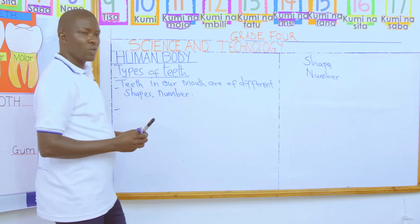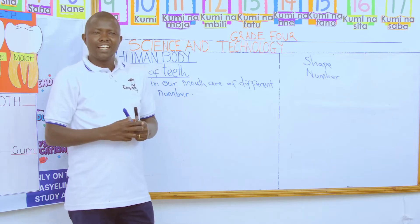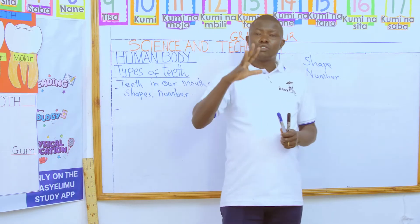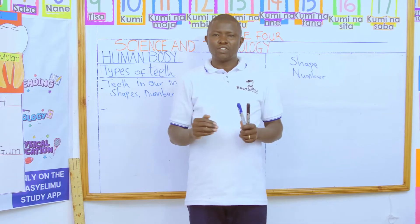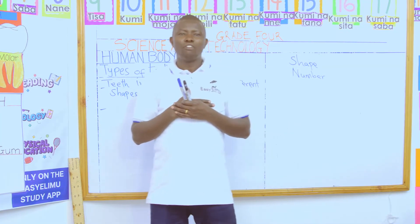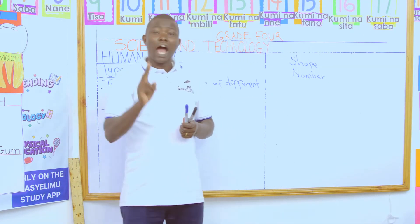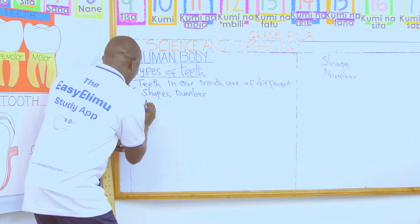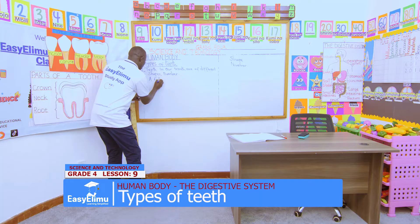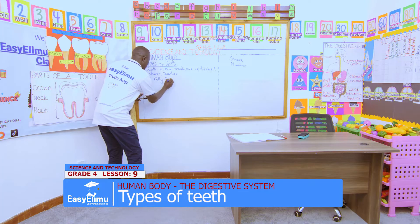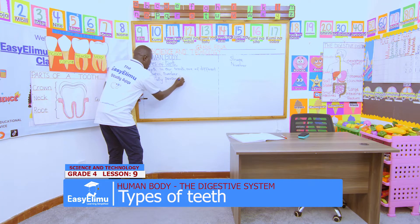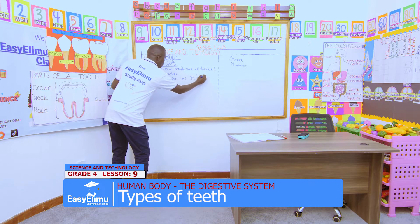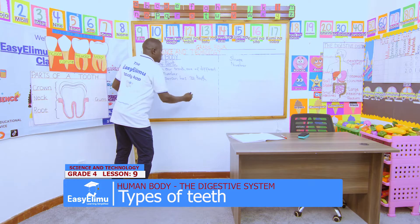Point number two: if you have grown to a grown-up person, like your teacher today, a fully grown person has thirty-two teeth. If you are fully grown, you will have thirty-two teeth.